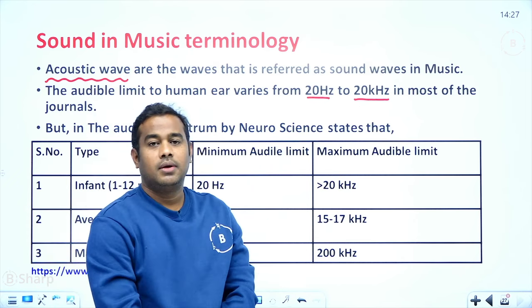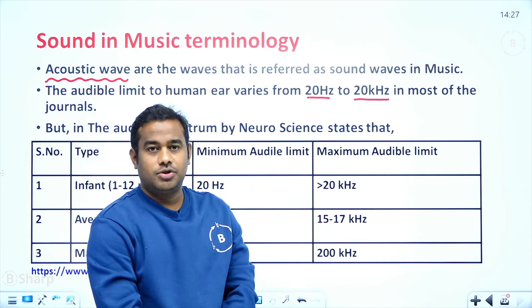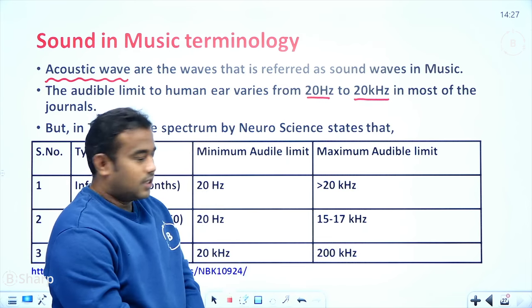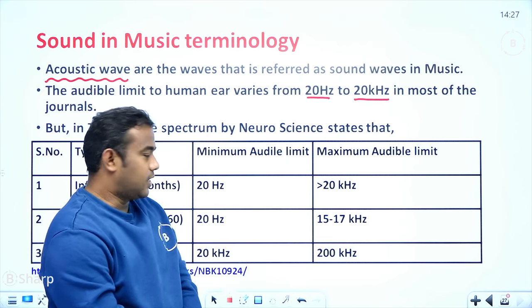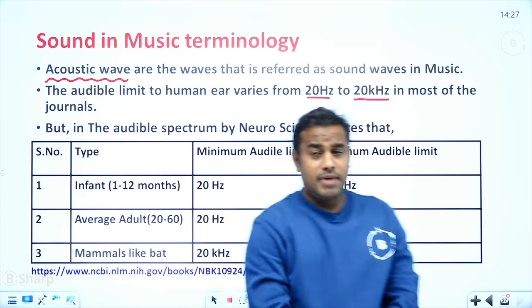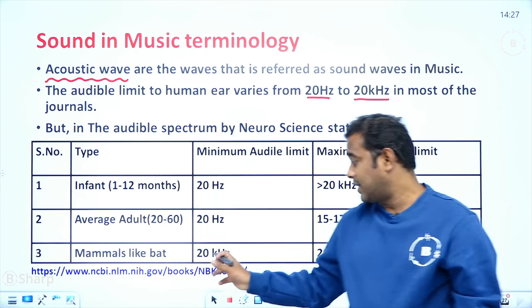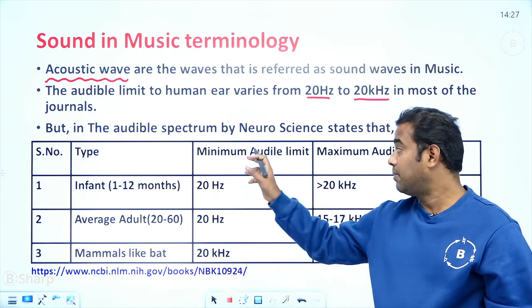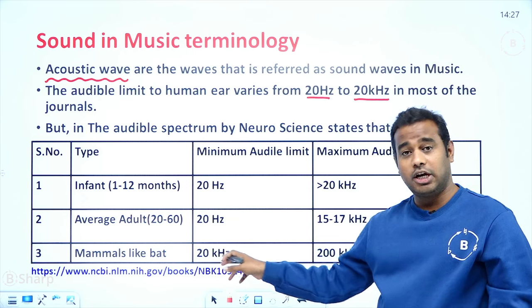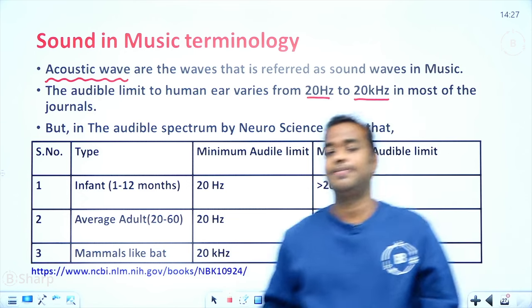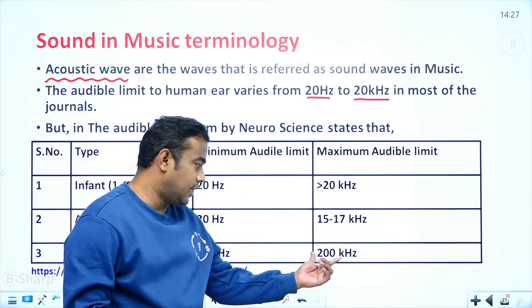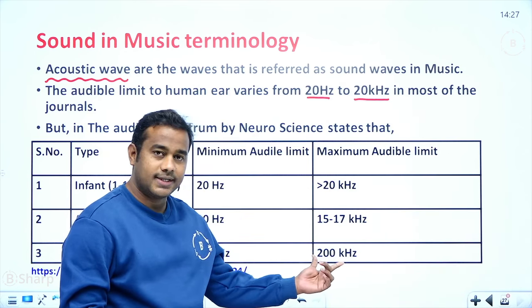Please keep this in mind when referring to journals versus textbooks. Some mammals, like bats, have a minimum audibility limit of 20 kilohertz and a maximum audibility limit that can reach up to 200 kilohertz.